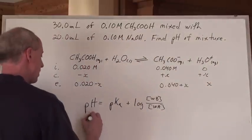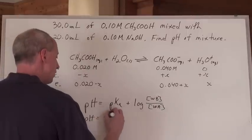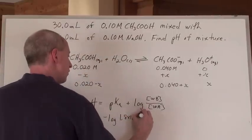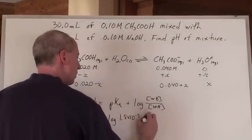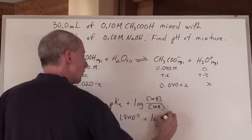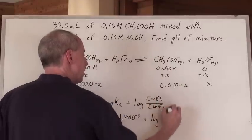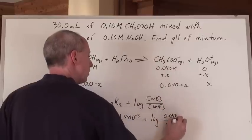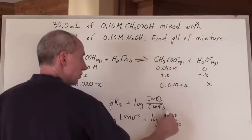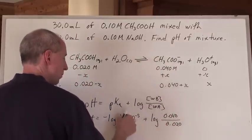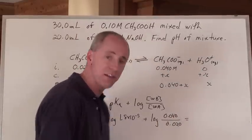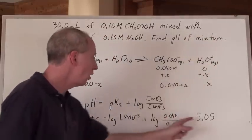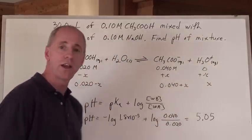So the pH here is going to equal the negative log of the Ka of acetic acid, which is 1.8 × 10⁻⁵, plus the log of the concentration of the weak base — 0.040 — over the concentration of the weak acid — 0.020 — which is the log of 2. When you do all of that math, you get a pH of 5.05 using the Henderson-Hasselbalch equation.